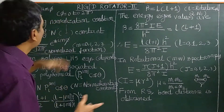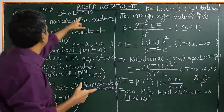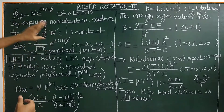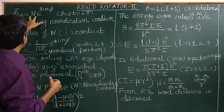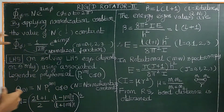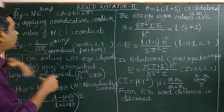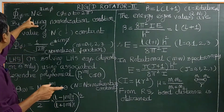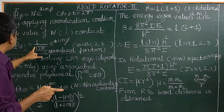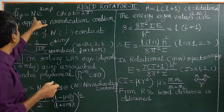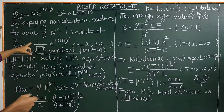Where φ, the value of phi ranges from 0 to 2π. And m equals — as we have seen in the previous class — by applying the normalization condition, the value of N is obtained. N is called the normalization constant. By applying the normalization condition, the normalization constant is obtained.